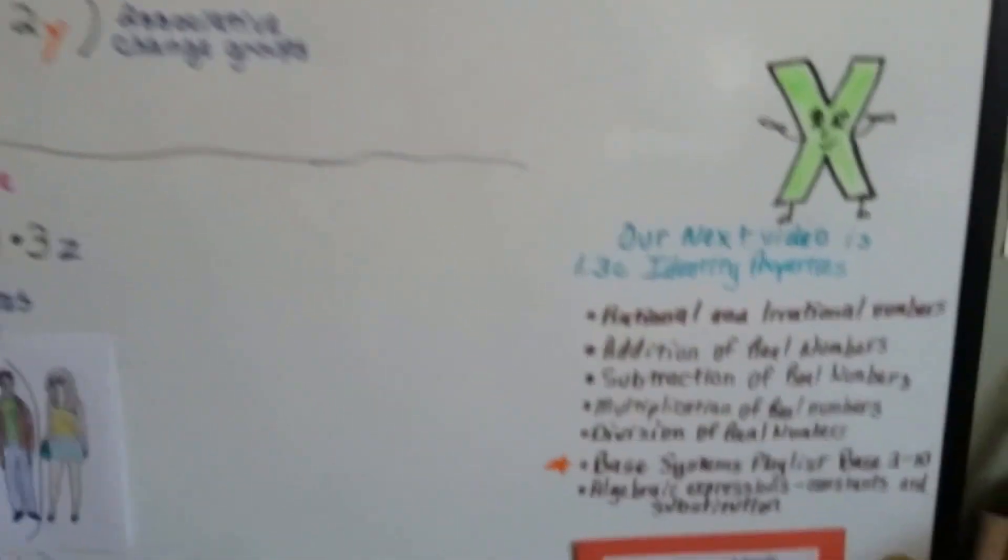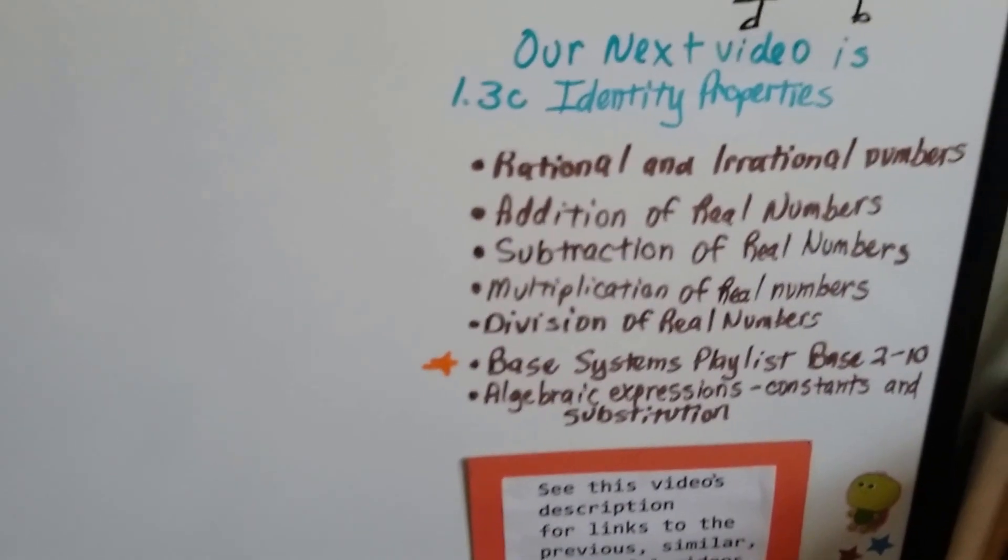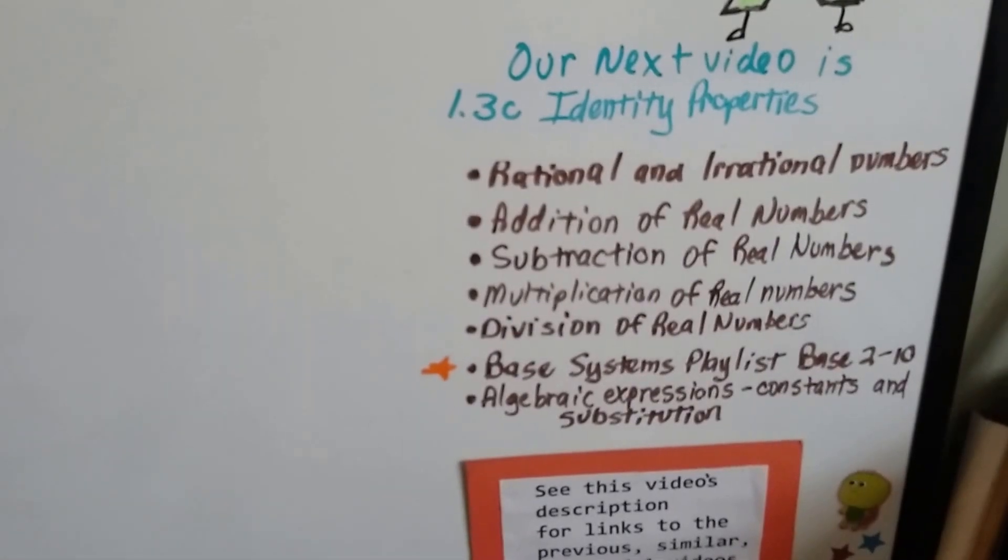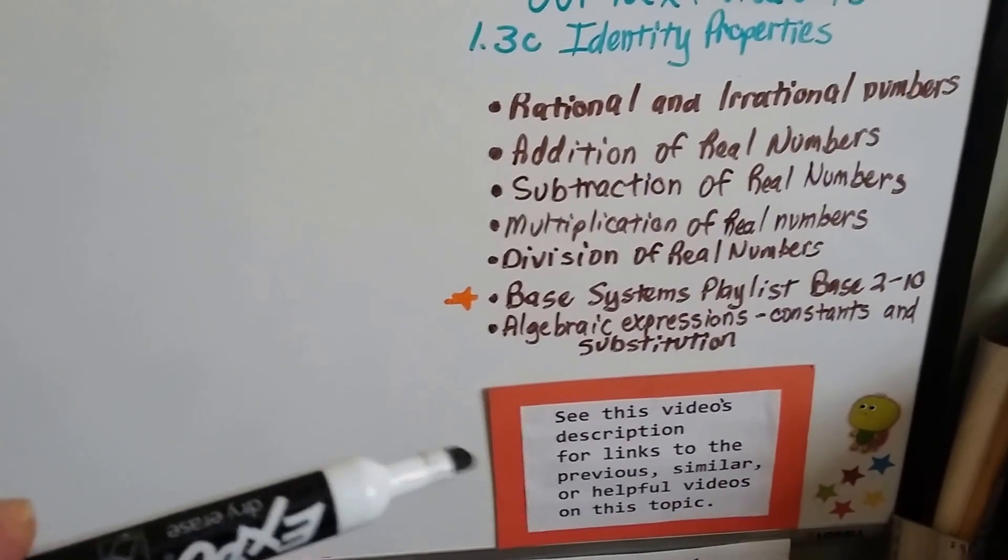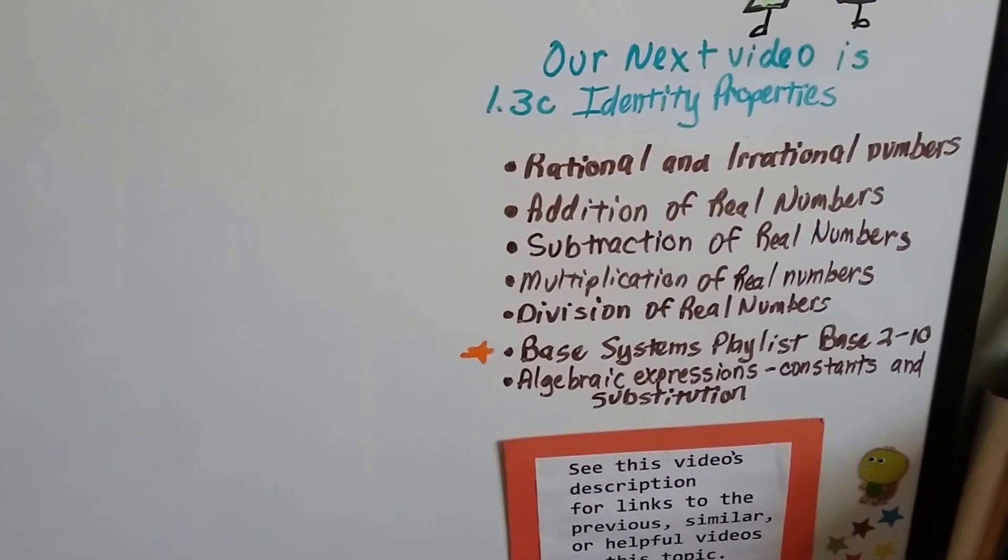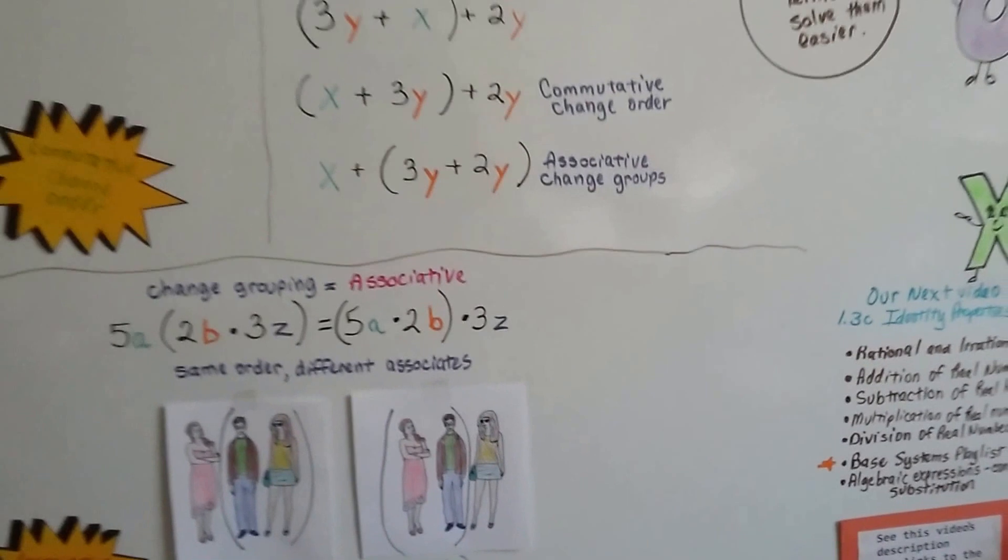So our next video, 1.3C, we're going to talk about the identity properties for 0 and 1. And if you want to link to any of the previous videos, just click on the description of this video and you'll see all the links for chapter 1 that we've covered so far. Because each one of my videos builds upon the previous one.